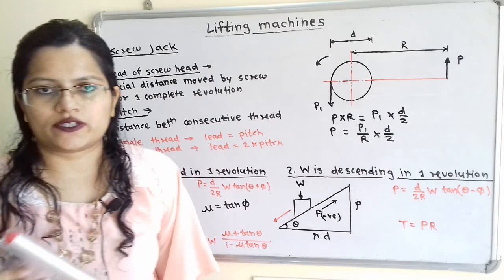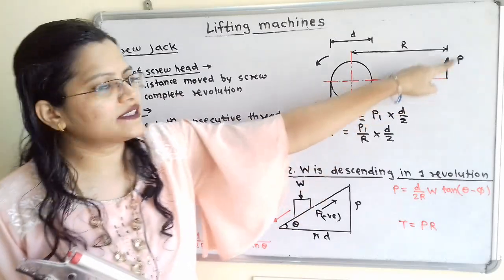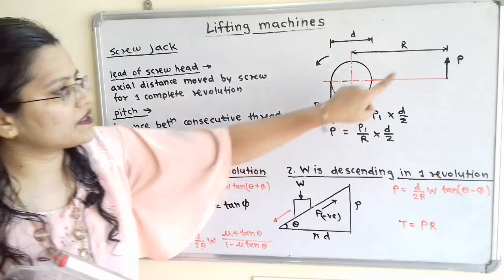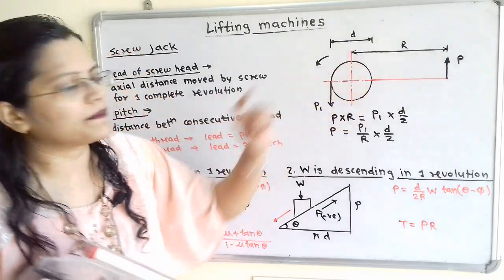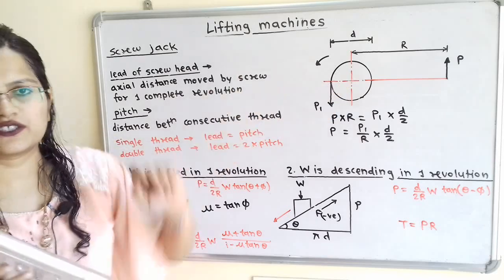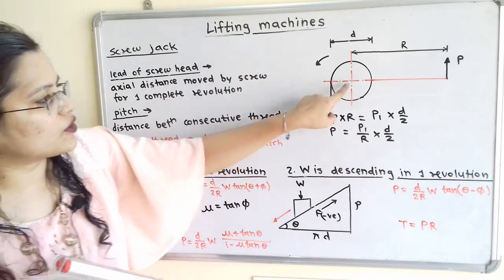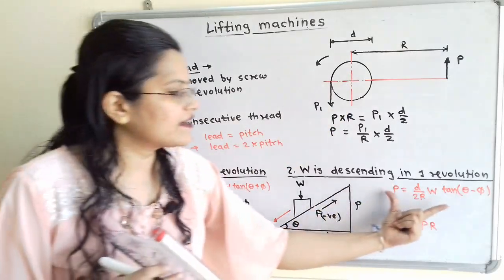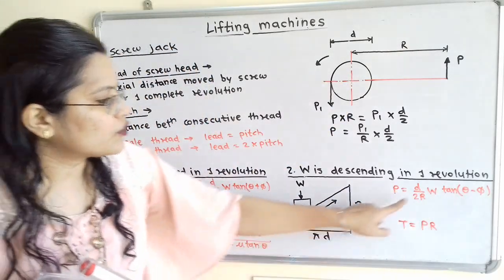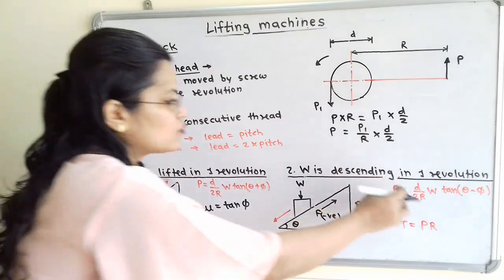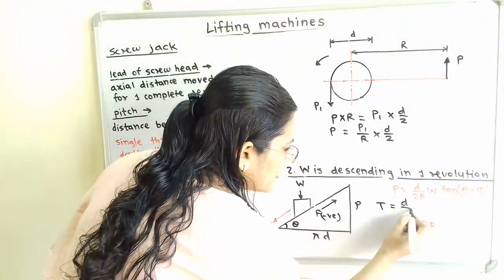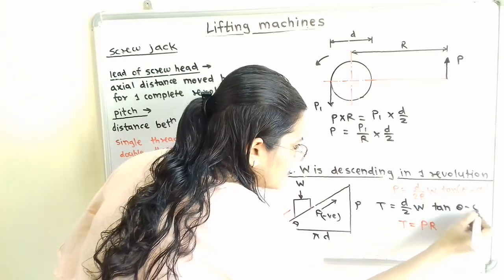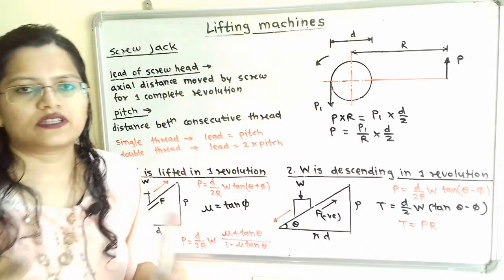Now how to find torque? Torque is applied for rotational motion and equals force multiplied by the perpendicular distance from the axis of rotation. So P × R = torque. Rearranging, torque = (d/2) × W × tan(θ − φ). This is the formula for torque.